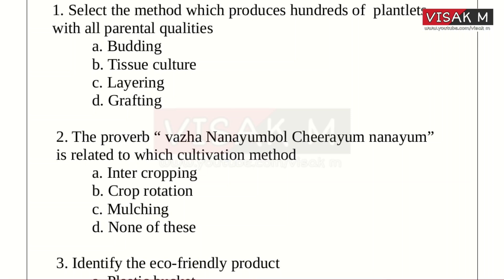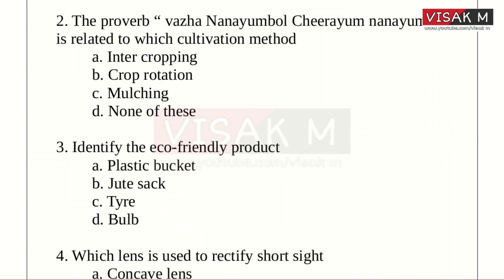Option A: Budding. B: Tissue Culture. C: Layering. D: Grafting. Which is the correct answer? Yes, tissue culture is the method of producing hundreds of plantlets with all parental qualities. Then next question.